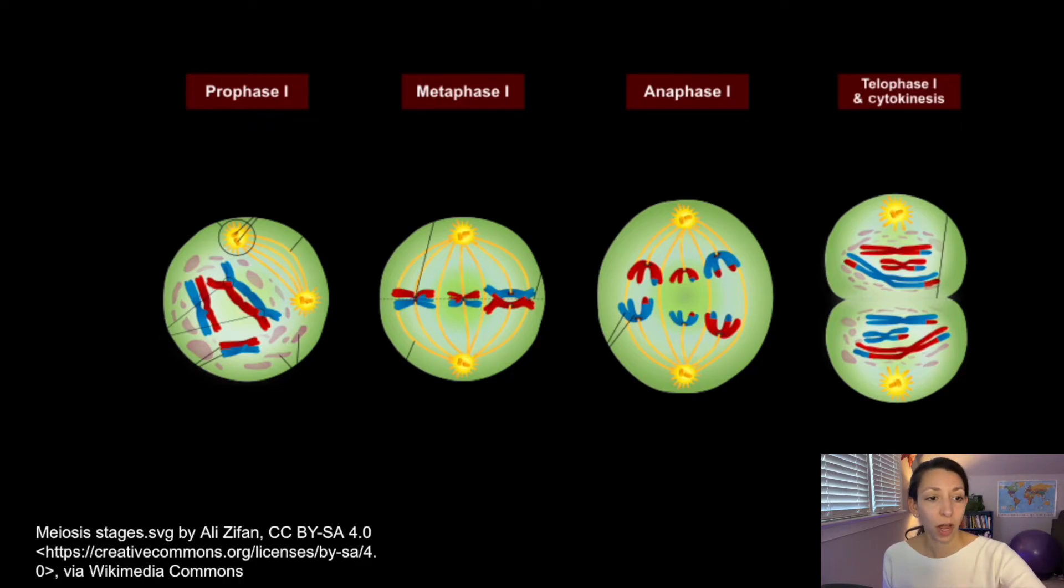So in meiosis 1, we have prophase 1 first and our chromosomes condense and become visible just like they do in prophase of mitosis. Our homologous chromosomes are going to pair up and we're going to have a process called crossing over where we have an exchange of genetic information between homologous chromosomes. This is really key in increasing genetic variation in organisms. And this is why no two siblings, unless they're monozygotic or identical twins, are going to have the exact same DNA.